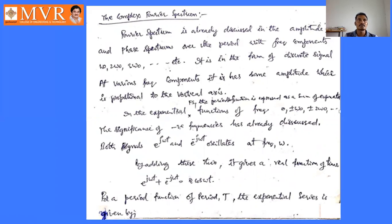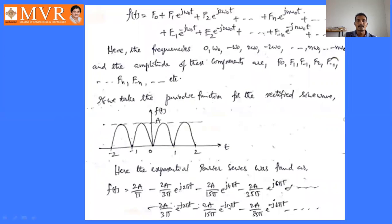In the exponential Fourier series, the periodic function is expressed as a sum of exponential functions of frequencies 0, ±ω₀, ±2ω₀, up to ±nω₀. Here negative frequencies are also included. Both signals e^(jωt) and e^(-jωt) oscillate at frequency ω. Adding these two oscillations — e^(jωt) + e^(-jωt) = 2cos(ωt) — so by adding these signals we get a real-valued function.